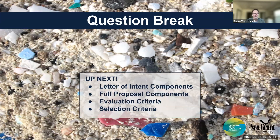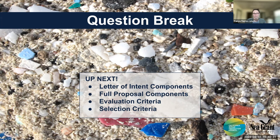I'm going to take a moment to stop and see if there are any questions so far on the award information, eligibility, or the research priorities. Coming up next we will talk about the letter of intent components, full proposal components, and evaluation and selection criteria. Regarding the template question — if you look at the RFP website we provide minimal guidelines such as font size and page limit, and the order in which the components are required. That's our template of sorts, but nothing more formal will be provided. We would prefer you follow those guidelines and stick to that order.